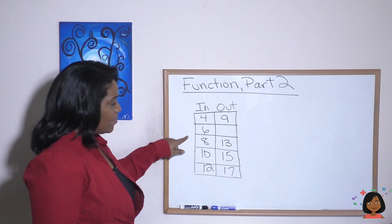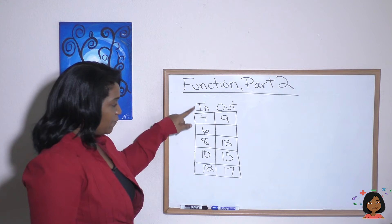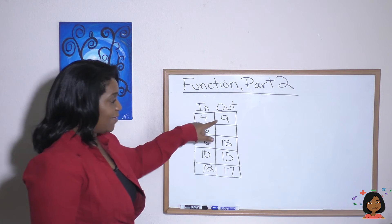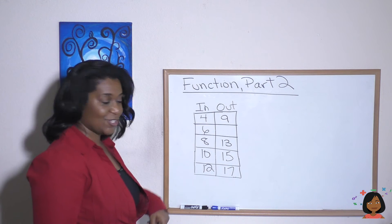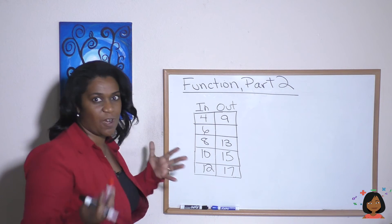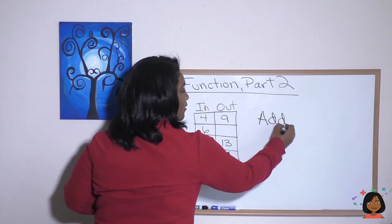So it looks like the pattern is if we add five to four, right? So to the in column, if we add five to it, we'll end up with our out. So four plus five is nine. Eight plus five is thirteen, ten plus five is fifteen. So it works. So the rule here is to add five.